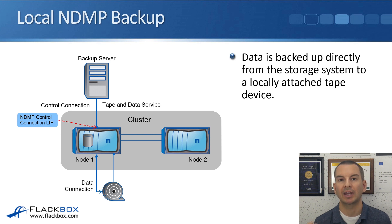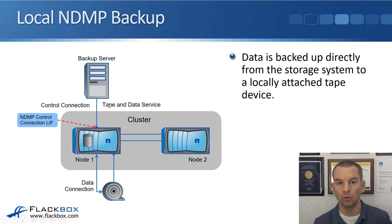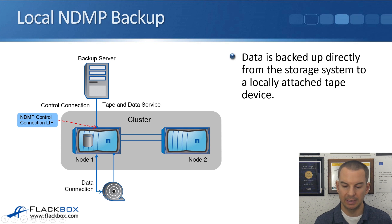There are three different types of NDMP backup that are supported. The first is local NDMP backup, where data is backed up directly from the storage system to a locally attached tape device. In this example, the backup server is connected to the ONTAP system over the IP network sending backup commands, and both the volume being backed up and the tape device are located on Node 1 — that's local NDMP backup.